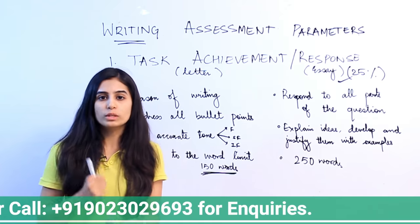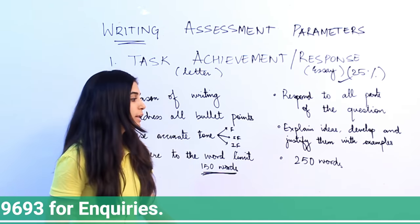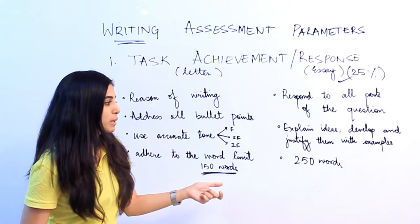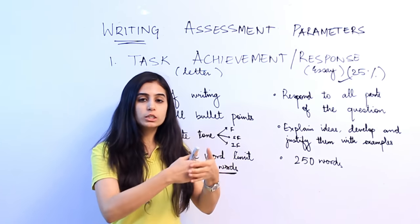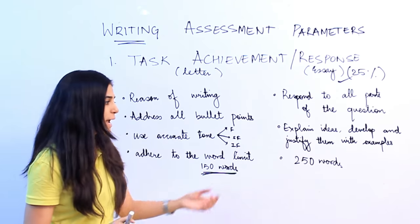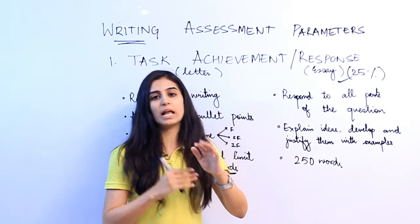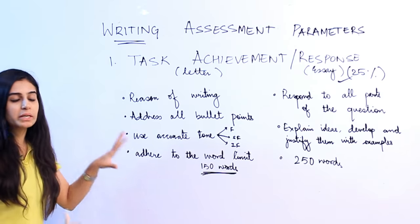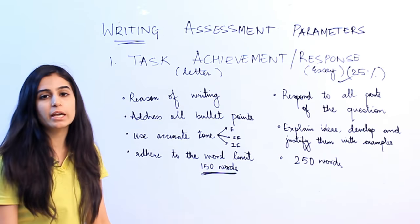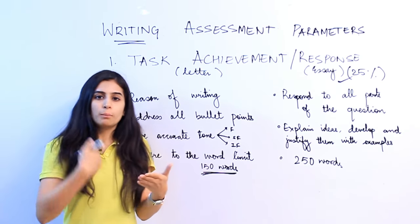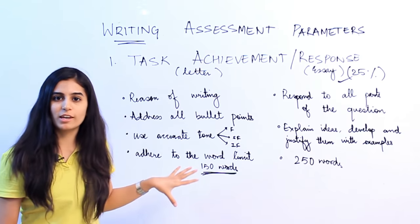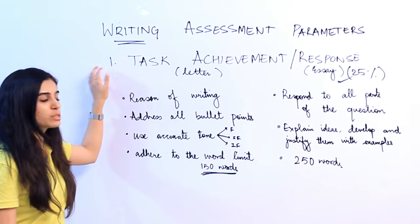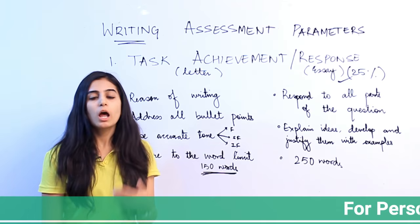The last point is to adhere to the word limit: write at least 250 words, but don't exceed 270 words, because doing so might prevent you from finishing within the 40-minute time limit. Write approximately 250 to 270 words and aim to conclude your essay within 40 minutes. If you have practiced before but haven't scored the desired band score, it may be because you haven't fulfilled this first parameter.